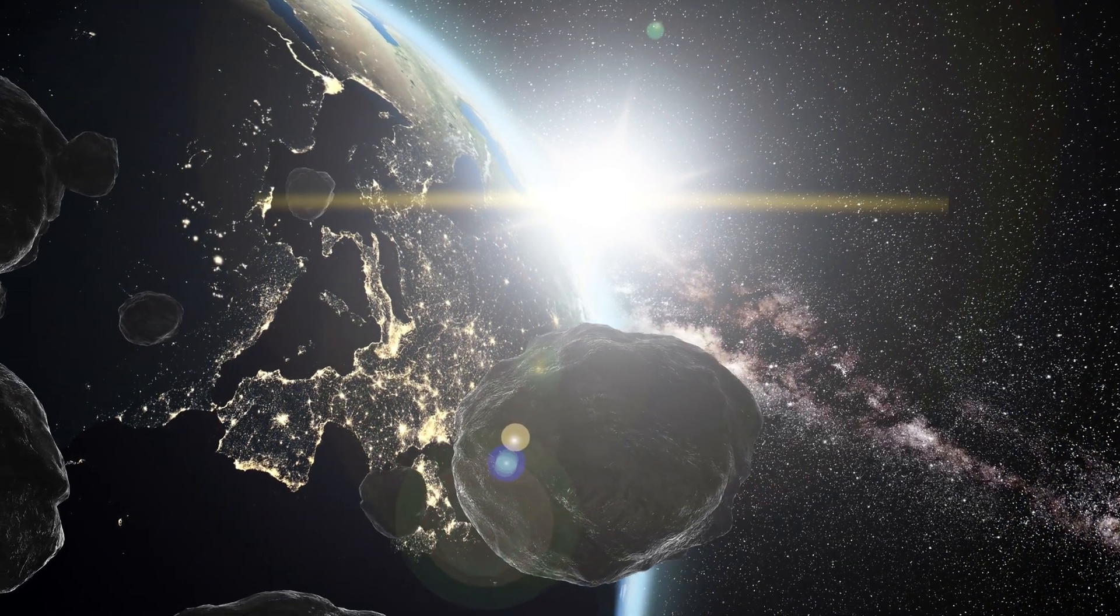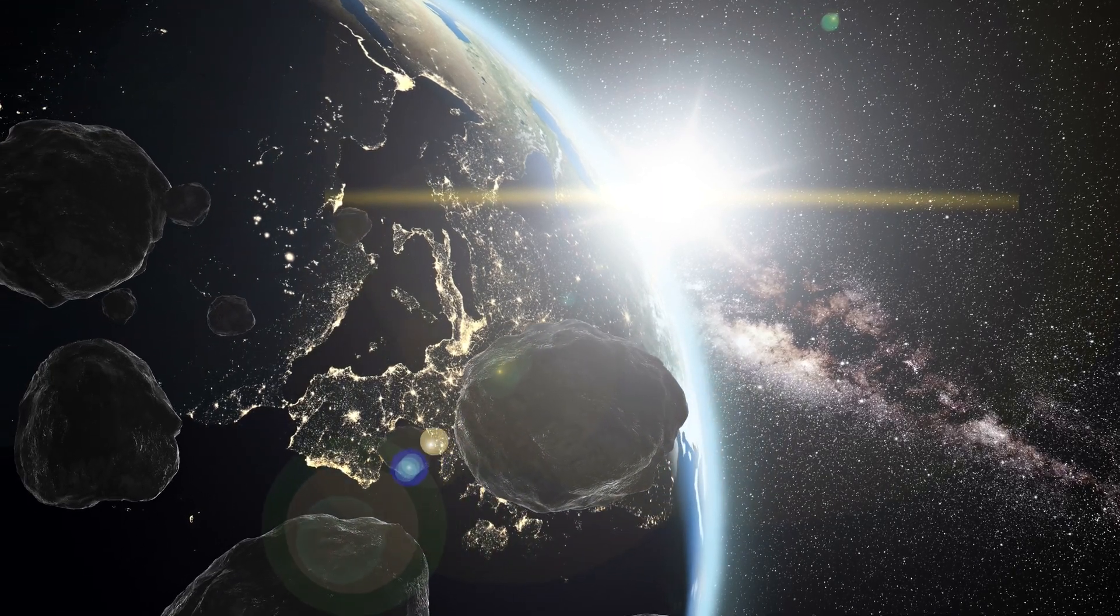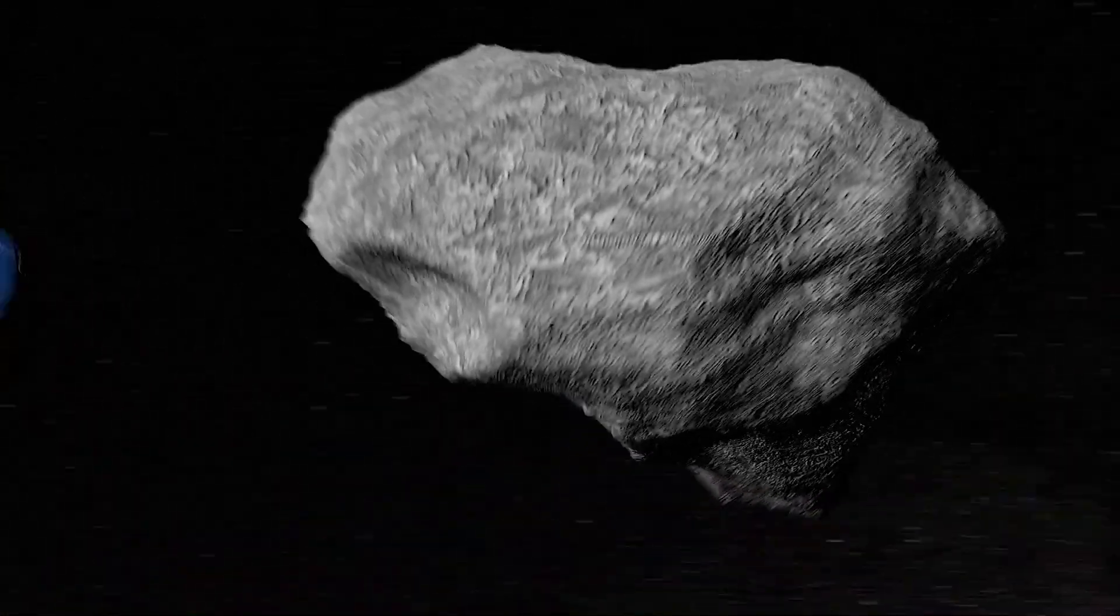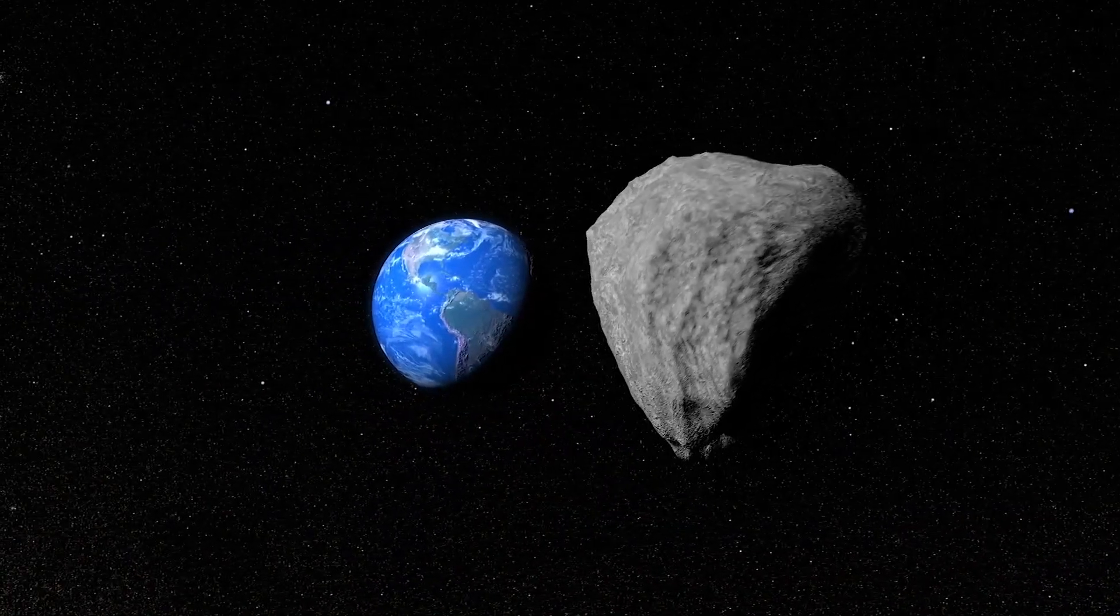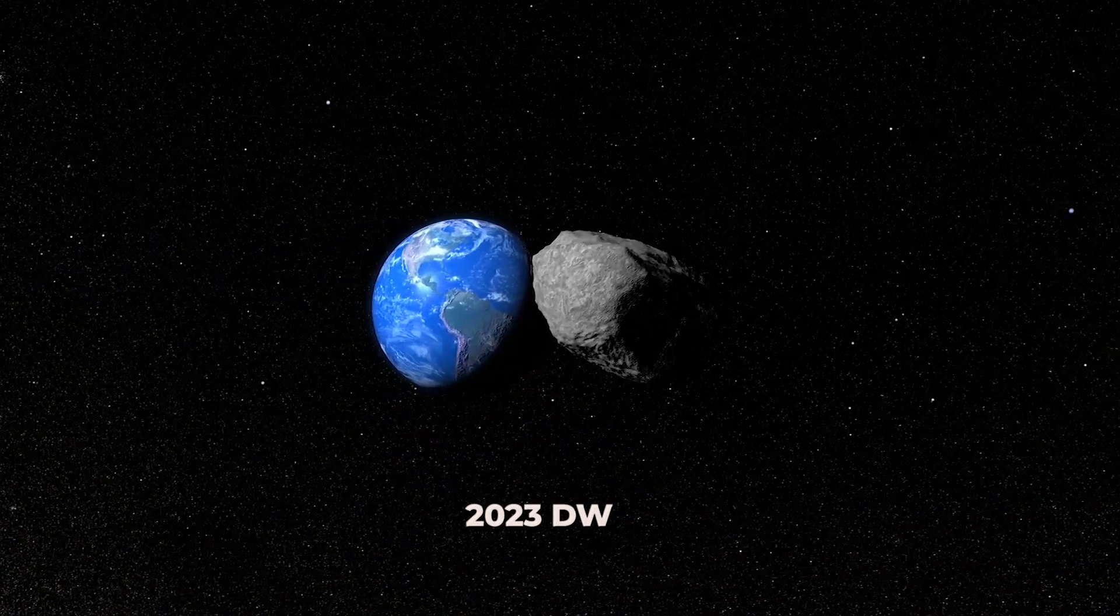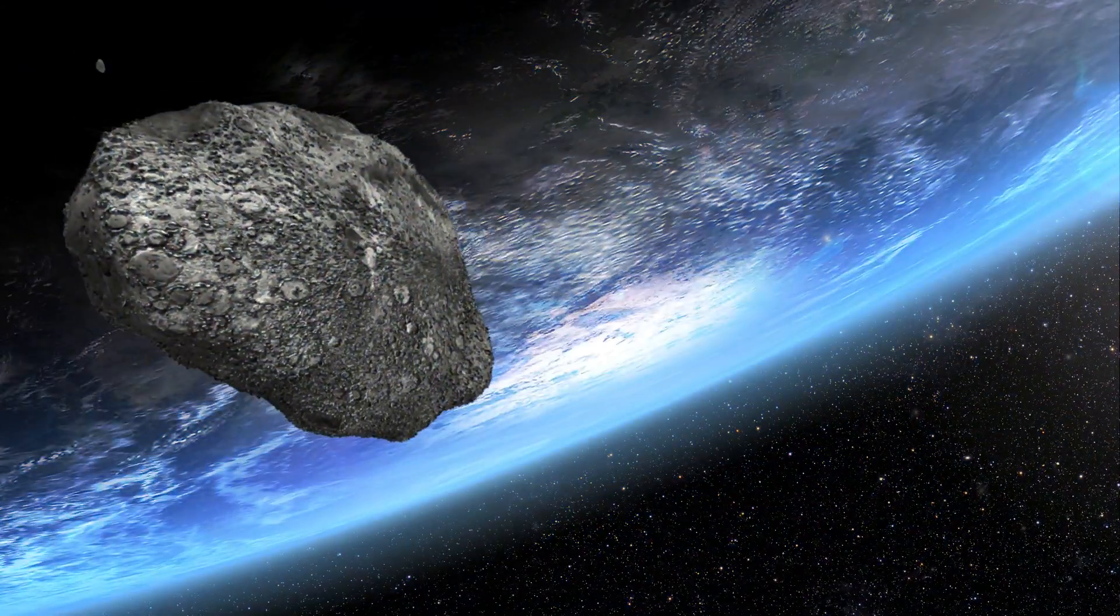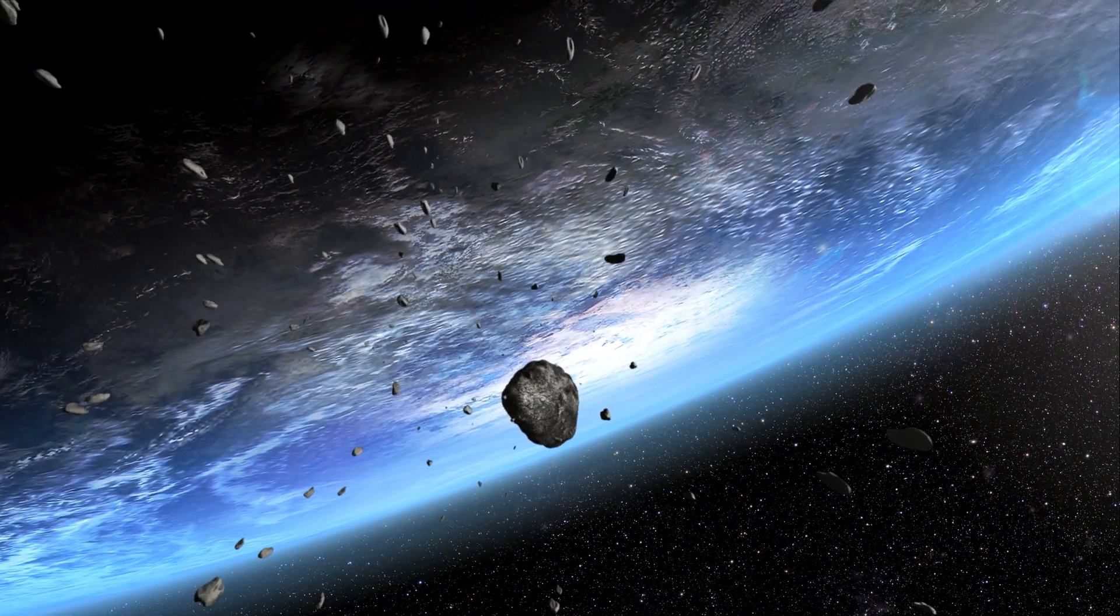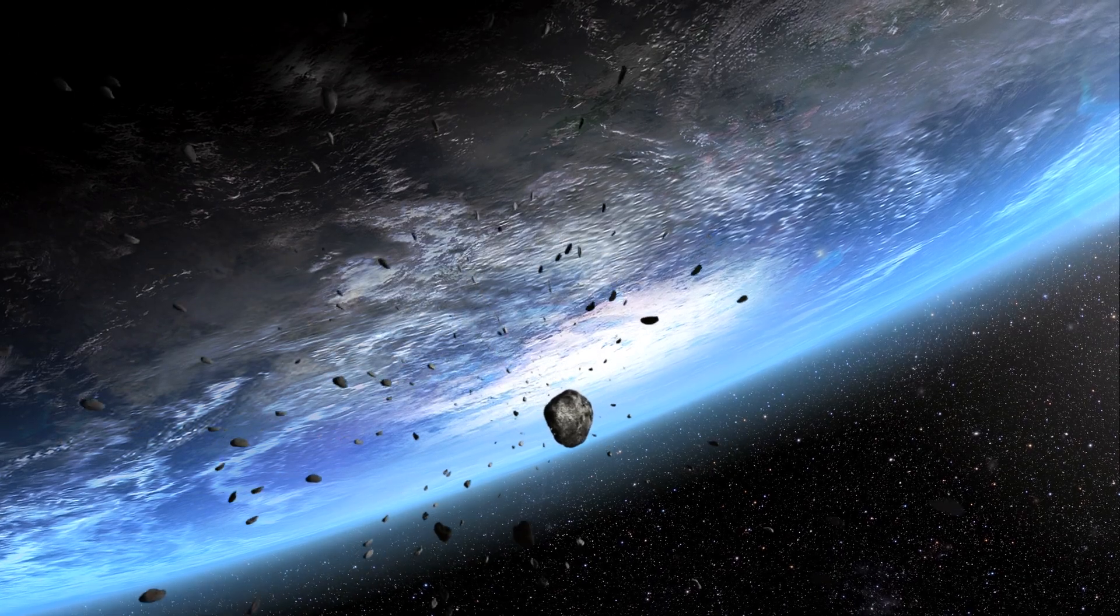As we wrap up our cosmic journey, let's take a moment to reflect on what we've learned. We've discovered that Earth has a new temporary companion, a mini-moon named 2023 DW. This small asteroid, roughly the size of a car, will be orbiting our planet for about two months.